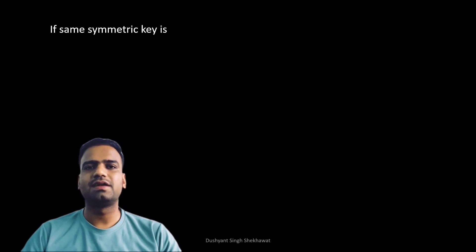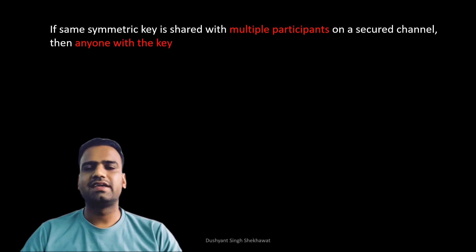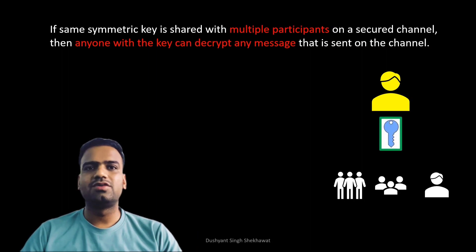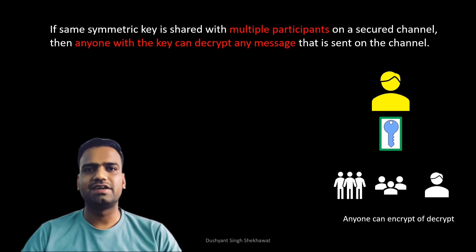Another limitation of symmetric encryption is that if the same symmetric key is shared with multiple participants, anyone with the key can decrypt any message sent on that channel. This means it is not possible to authenticate the sender of a message — you cannot be sure who sent it because everyone is using the same key. For example, if you share a symmetric key in a group chat, all members have access and you cannot identify who encrypted or decrypted any given message.